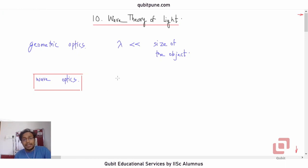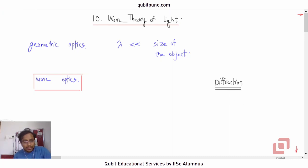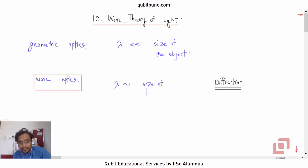In wave optics, in particular the diffraction phenomenon, we see that when the wavelength of light is of the same order as the size of the object, then light bends — it deviates from its rectilinear propagation.